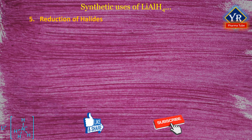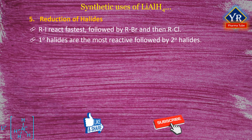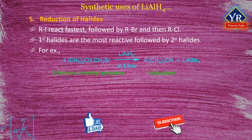Number 5: Reduction of halides. Lithium aluminium hydride also reduces alkyl halides to alkanes. Alkyl iodides react the fastest, followed by alkyl bromides and then alkyl chlorides. Primary halides are the most reactive followed by secondary halides. Tertiary halides react only in certain cases. For example, 1-bromo-2-methylpropane is reduced to isobutane, which is an alkane.